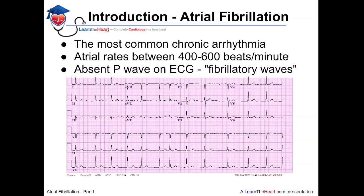Atrial fibrillation's finding on an EKG, which is the best way to diagnose it, is the absence of P waves and an irregularly irregular QRS complex. Frequently, fibrillatory waves can be seen.